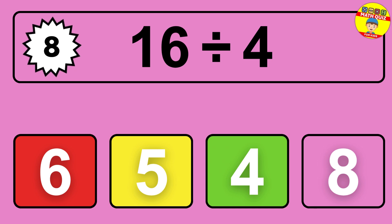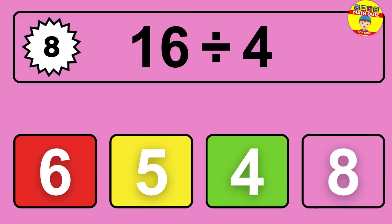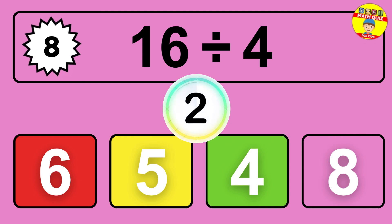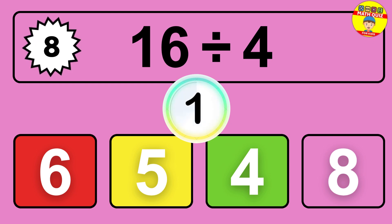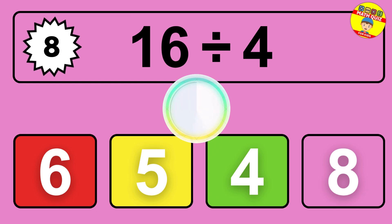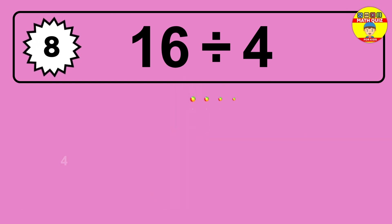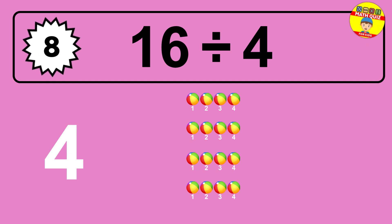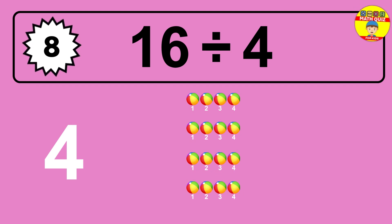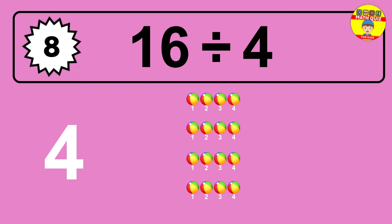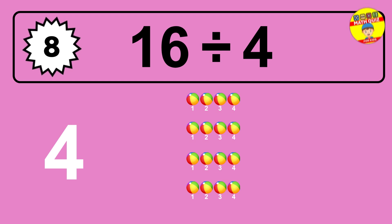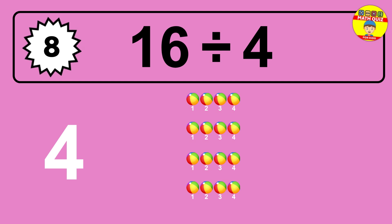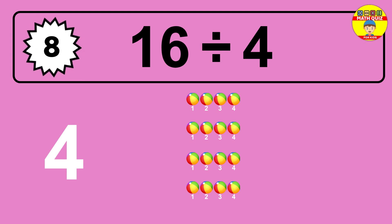16 divided by 4 is time to think. Let's go to the solution. Divide the number 16 by 4. Each group contains 4 units, so dividing 16 by 4 results in 4 equal groups. Thus the result is 16 divided by 4 equals 4.